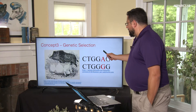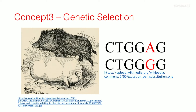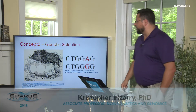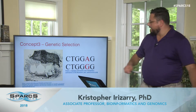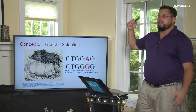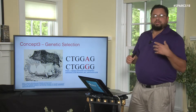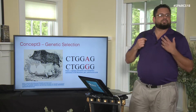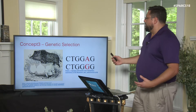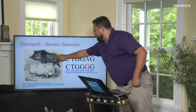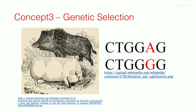When we select for a particular trait — say a SNP where an A allele is associated with one appearance and a G allele with another — selecting the G gives a population that looks one way, and selecting the A gives a population that looks another way. To understand what was selected, we look for regions of no variation in the selected population, then go back to the parental population and observe that both A and G were present there.